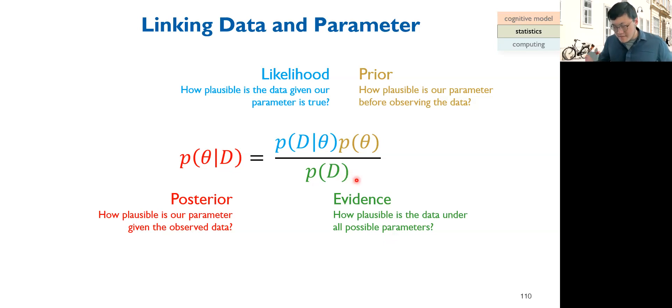The 'prior' is the probability of theta before observing any data — how plausible is the parameter before conducting the experiment. It can come from domain knowledge, previous literature, or a pilot study. For example, data from 10 pilot participants can inform your prior before testing the main 50 participants. The 'evidence' P(D) is a normalizing term ensuring the posterior sums to one — it's tricky to interpret but not critical to understand in detail.